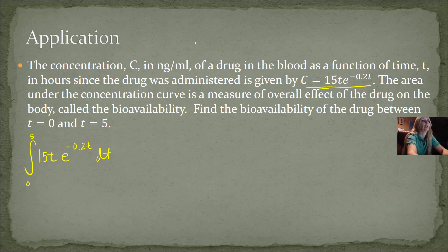And it wants me, it says the bioavailability is found by finding the area under the curve and find it between 0 and 5. So again, I would, let's go up here and get some room. I'd let u equal 15t. du would equal 15. So this is a lot like the last one. My v prime would equal e to the negative 0.2t. And so then v becomes negative 1 over 0.2e to the negative 0.2t. So that's my antiderivative, which is the same as negative 5e to the negative 0.2t.